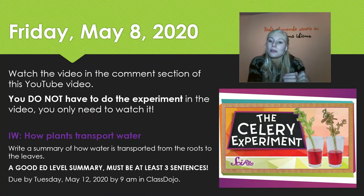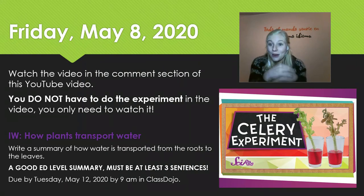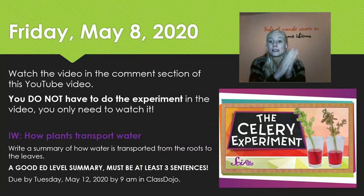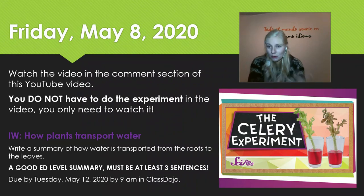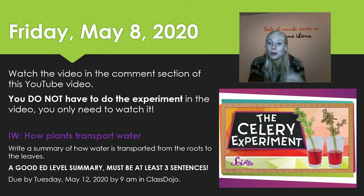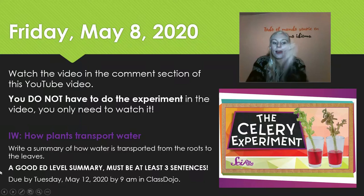Do not look up on the internet 'how is water transported from roots to leaves in plants' and just write down the first three sentences you see, because that's not learning anything. You need to watch the video, and after you watch the video you're going to write three sentences and send them to me — your own sentences, what did you get out of the video. You can't really be wrong unless you don't watch the video.